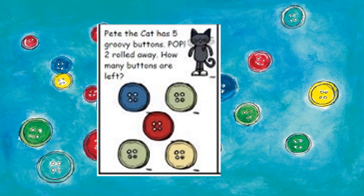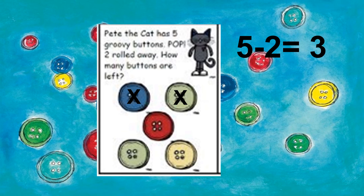Pete the Cat has five groovy buttons. Pop! Two rolled away. How many buttons are left? Let's count our buttons. Put your finger on it. One, two, three, four, five. There are five buttons. Two buttons rolled away. Let's X out two buttons. One, two. Now let's count how many buttons are left. One, two, three. Five minus two equals three. Pete the Cat had five buttons, two popped off, and now he has three left.